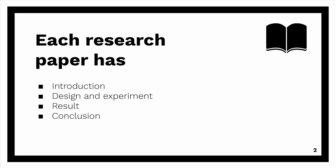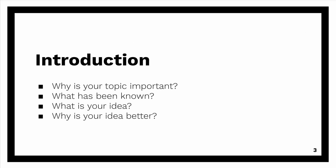My previous research project used chemicals to generate power for robotic legs to help physically disabled people. So what I need to say in my paper about the introduction covers the following: Why is my topic important? What has been known about this topic? What is my idea? And why is my idea better than others?